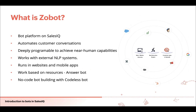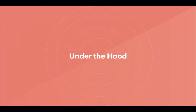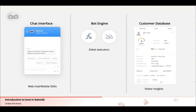Now let me tell you how bots and SalesIQ function as fragments in the market. Usually in the market, there is first a chat interface used for user interactions on websites and mobile applications — this is where hundreds of message exchanges take place. Then there is a bot engine to design the bot software. Using these engines you can design bots to work as per your business needs. Without the bot engine, you cannot define the functionalities or flow of the bot.